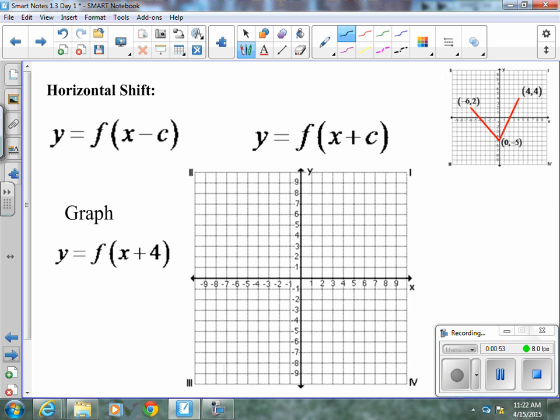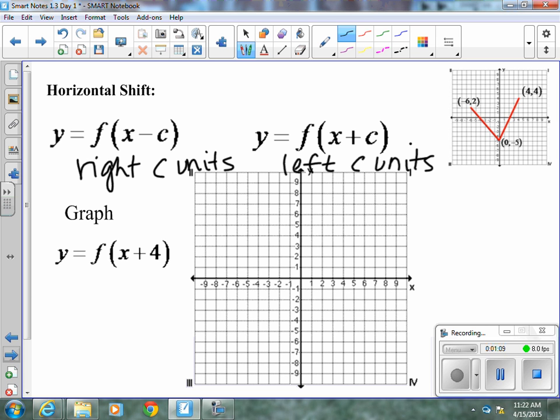Horizontal shift, remember our x's behave a little backwards, so this is actually going to move right C units, and this is going to be left C units. So a plus 4 is going to move left 4, so instead of (-6, 2), it would be at (-10, 2). Instead of (0, -5), it would be at (-4, -5), and instead of (4, 4), it would be at (0, 4), and that would give us a horizontal shift of 4 to the left.